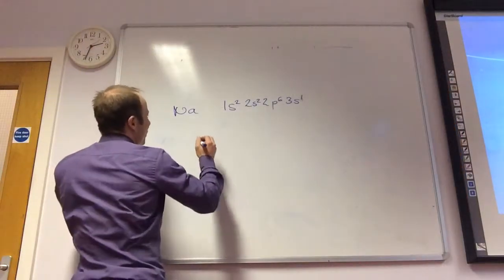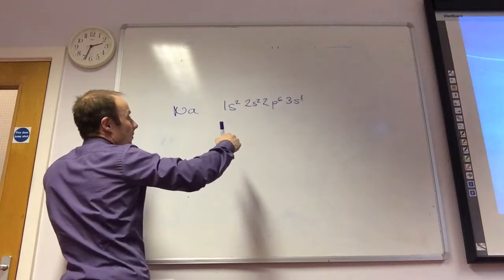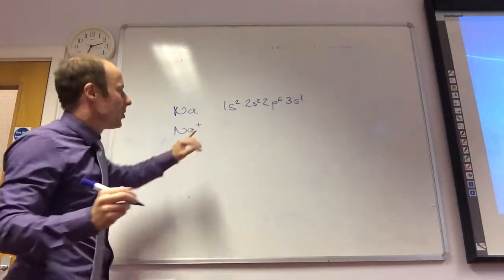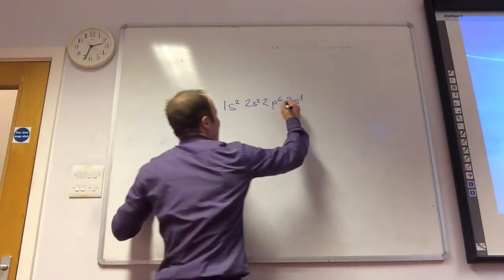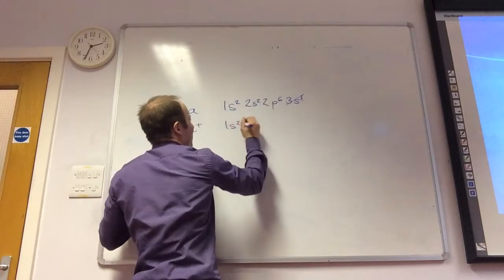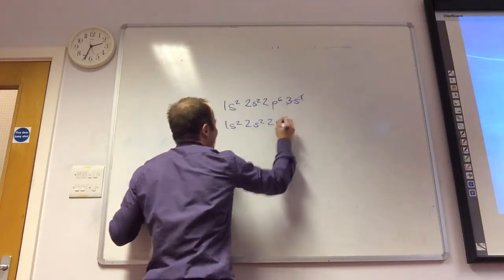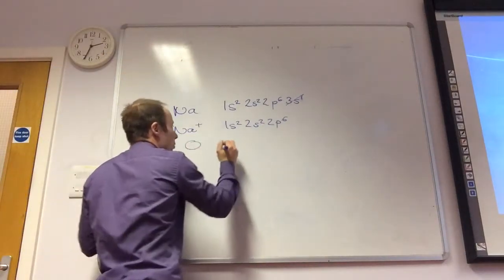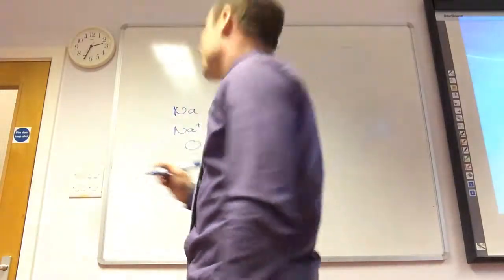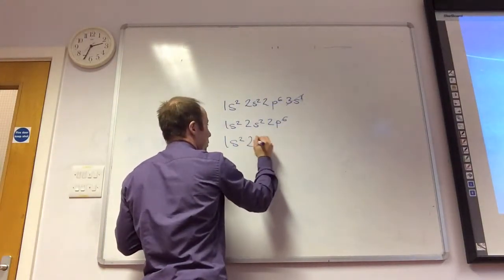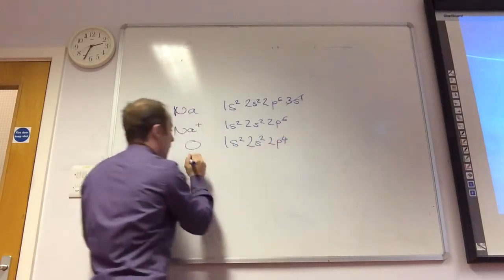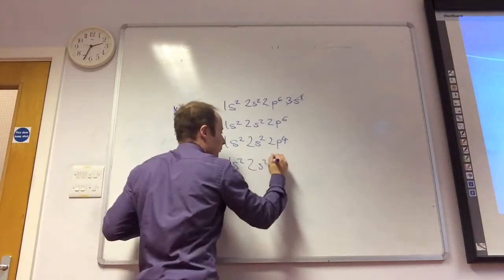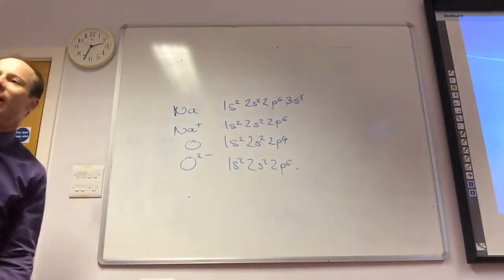If that's the electronic configuration of sodium, we also need to be able to point out the electronic configuration of sodium ions as well. If I then said Na+, what am I going to do to that one? Take off the 3S1. So that just becomes 1S2, 2S2, 2P6. Equally, if we do oxygen. Oxygen has got 8, so it's going to be 1S2, 2S2, 2P4. O2 minus. 1S2, 2S2, 2P6. You've got to be able to work out that as well.